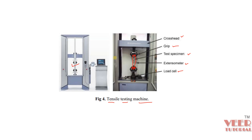In physical testing, the specimen is kept fixed from the bottom and pulled from the top. The testing machine pulls the top end of the part in the upward direction, and because of this pulling, a stress is generated inside the body.